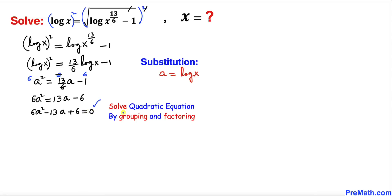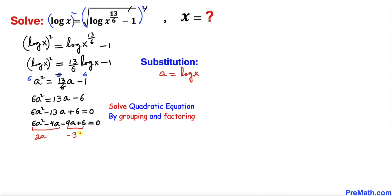This becomes 6a squared minus 13a plus 6 equals 0. This is our quadratic equation and we are going to solve it by grouping and factoring. Let's focus on the middle term, negative 13a. I can write this as negative 4a minus 9a. In the first two terms, 2a is in common, and in the last two terms, negative 3 is in common. So we can write this as 2a times 3a minus 2, and factoring out negative 3 gives us negative 3 times 3a minus 2, equal to 0.